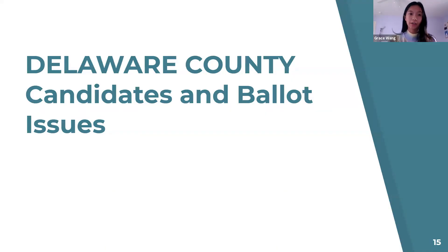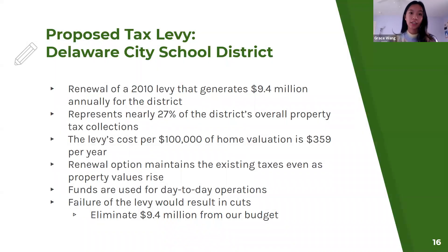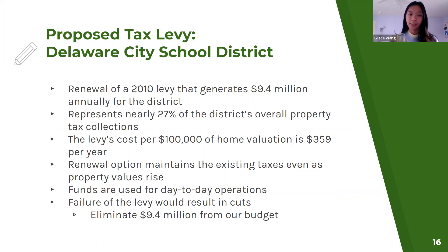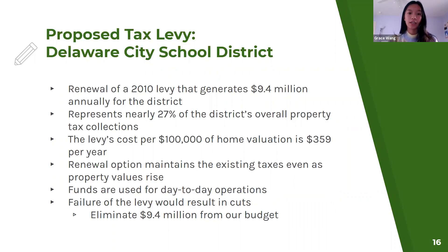Now we're moving on to Delaware County and their ballot issues. The first is a tax levy regarding the Delaware City School District — a renewal or continuation of the 2010 levy that generated $9.4 million annually for the district. It represents about 27% of the district's property taxes, meaning the levy's cost is $359 per $100,000 of home valuation. Due to rollback laws, the renewal option maintains existing taxes even as property values rise. An inability to pass the tax levy will result in $9.4 million of cuts from the district.